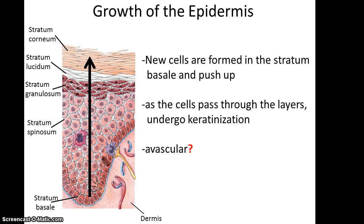Growth of the epidermis goes from deep to superficial. The keratinocytes are only undergoing mitosis at the stratum basale layer. Whenever a new cell is formed, it's pushed up into the stratum spinosum. The cells in the stratum spinosum then get pushed up, and some of them will end up in the stratum granulosum, and so forth. As the cells pass through these various layers, they undergo keratinization — that is, their keratin intermediate filaments are slowly converted into keratin.